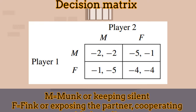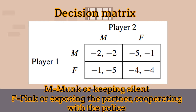This is the decision matrix for this problem. The first number corresponds to the number of years which prisoner 1 would spend in prison. The second number corresponds to the number of years which the second player would spend in prison, depending on the decisions they make. The letter M means 'mute' — it means keep silent. The letter F means 'fink' — it means exposing the partner. If they expose the partner or cooperate with justice, their penalty would be reduced by one year.